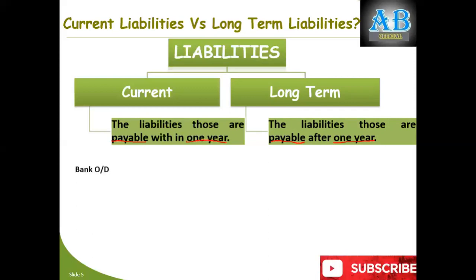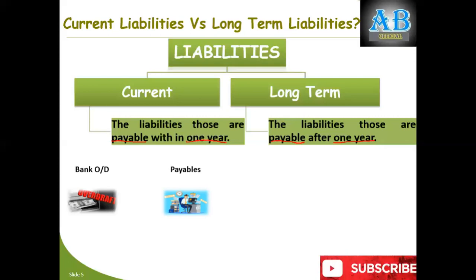Let's discuss some examples of current liabilities. Bank overdraft is a facility given by the bank to a trustworthy client against their current account. For example, if you have a balance of 10,000 but someone presents a check of 15,000, normally the bank would dishonor it, but with overdraft facility the bank honors it and 5,000 becomes receivable from you — your liability. Once you deposit the amount, the bank subtracts it. Bank overdraft is a current liability, payable within one accounting period. Payables are also current liabilities — these are amounts owed to persons from whom you bought goods on credit, normally due within one accounting period.